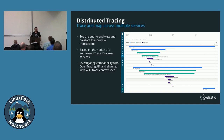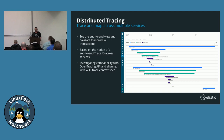Q&A: On flow inputs — does Elastic accept S-Flow or J-Flow in addition to NetFlow? NetFlow is one of the Logstash modules. Some of these industry standards get moved to a Beat agent over time. Whether those other standards are supported would require checking the Logstash module list.